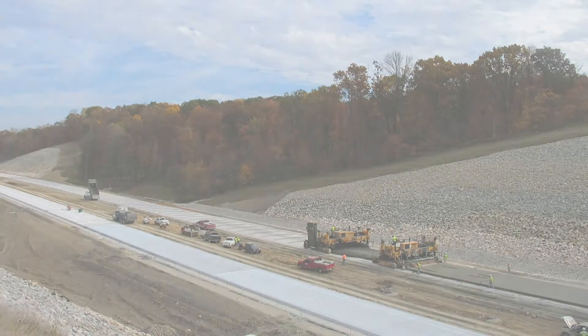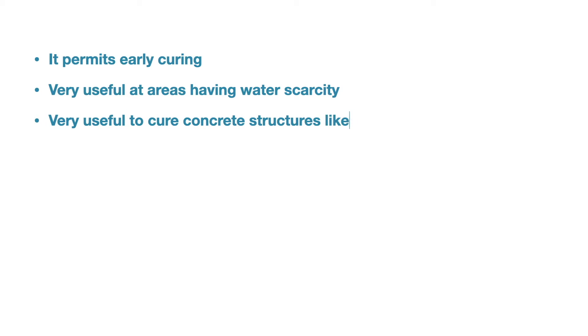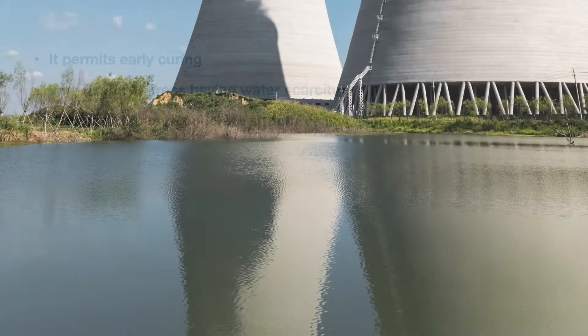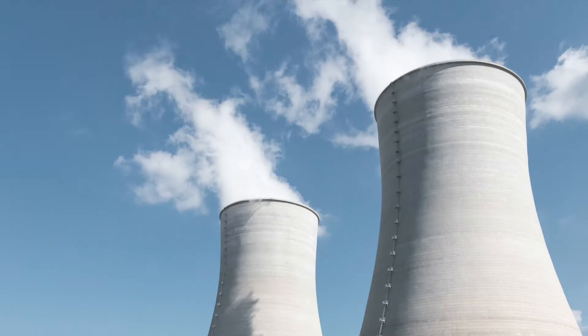Advantages of curing compounds include: they permit early curing as they can be applied within about half an hour of casting; they are indispensable at places where there is an acute shortage or non-availability of water; and they are useful in places that are non-accessible or practically difficult to cure, like tall chimneys or cooling towers. However, curing compounds are not suitable for surfaces on which an overlay or topping is to be laid, as they interfere with the bonding properties of other materials.